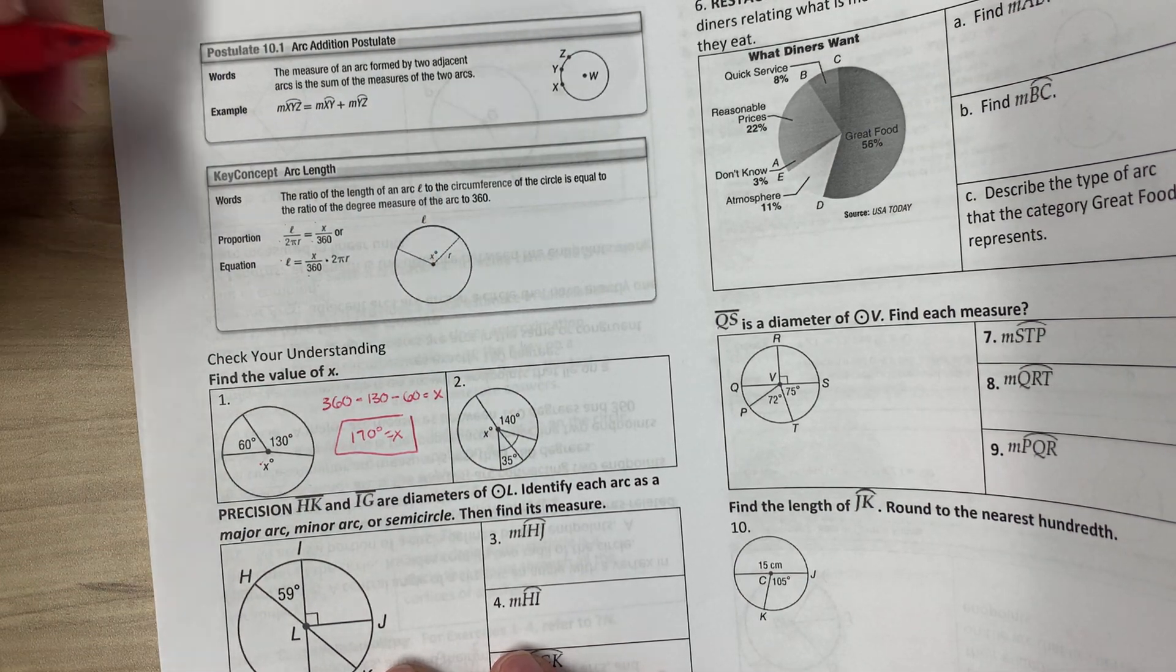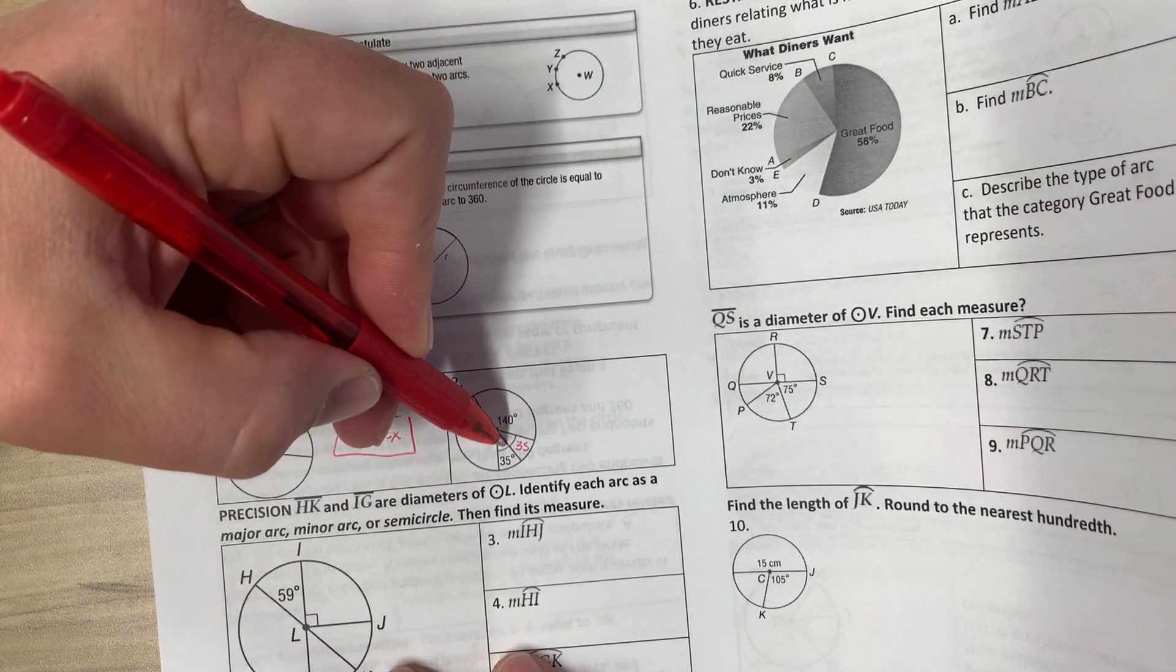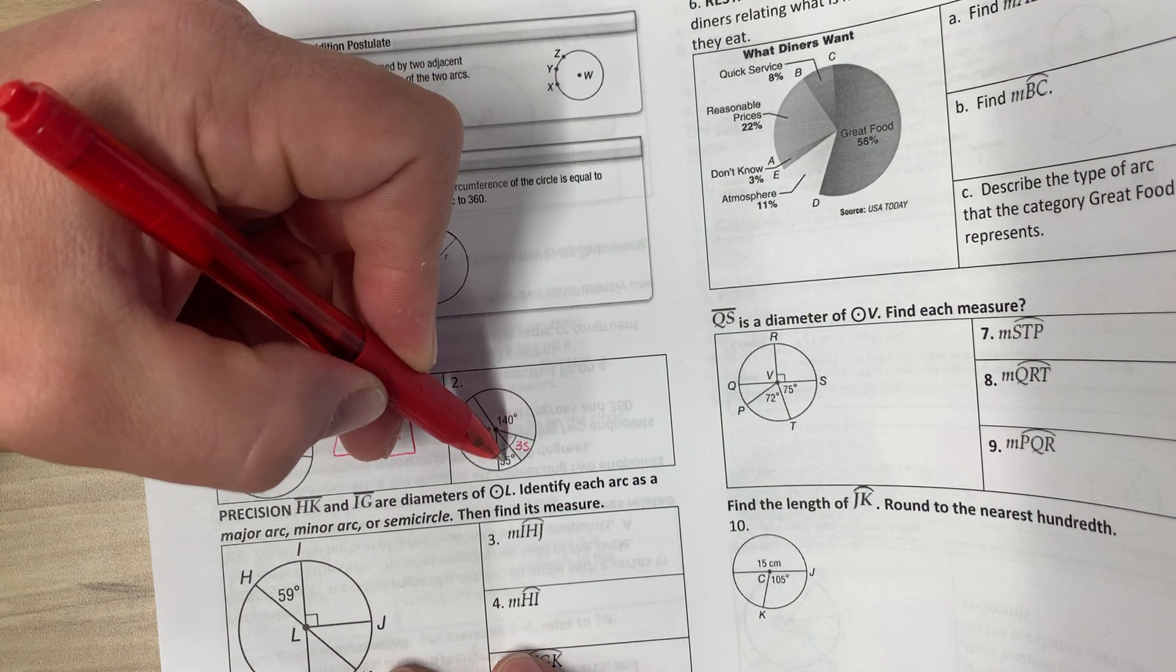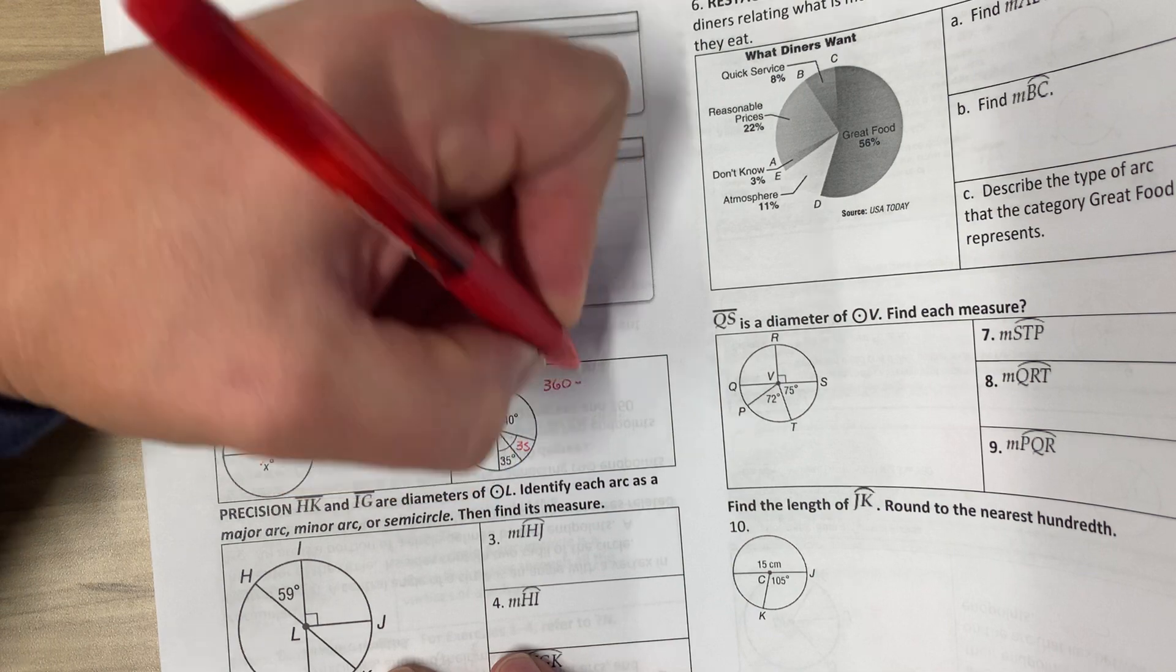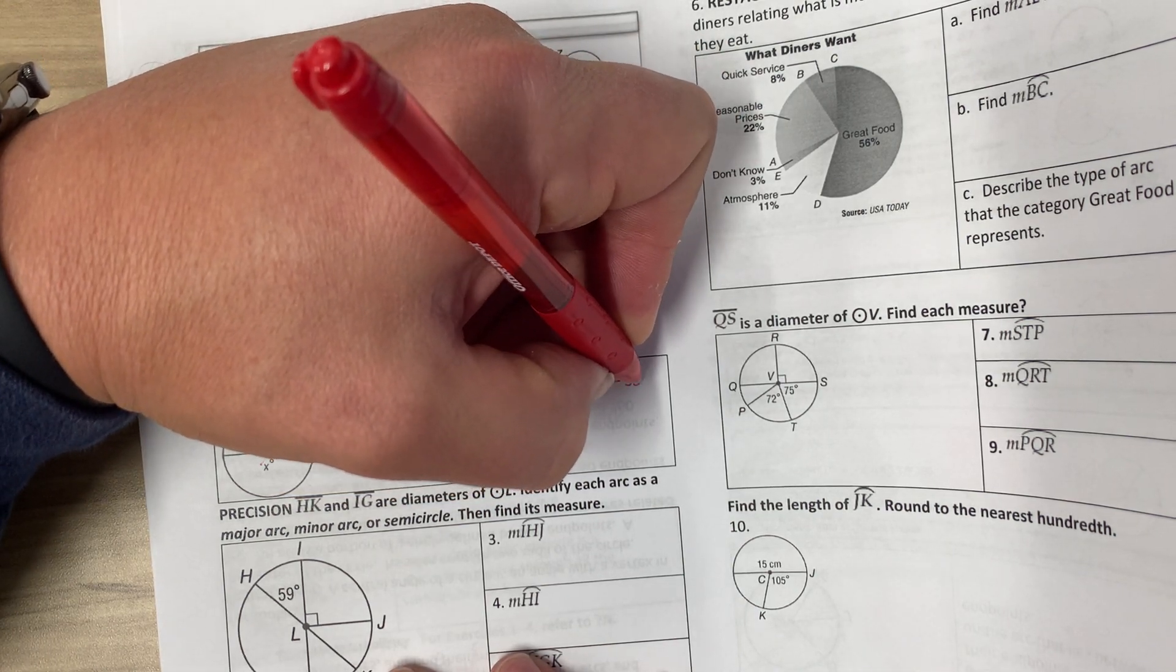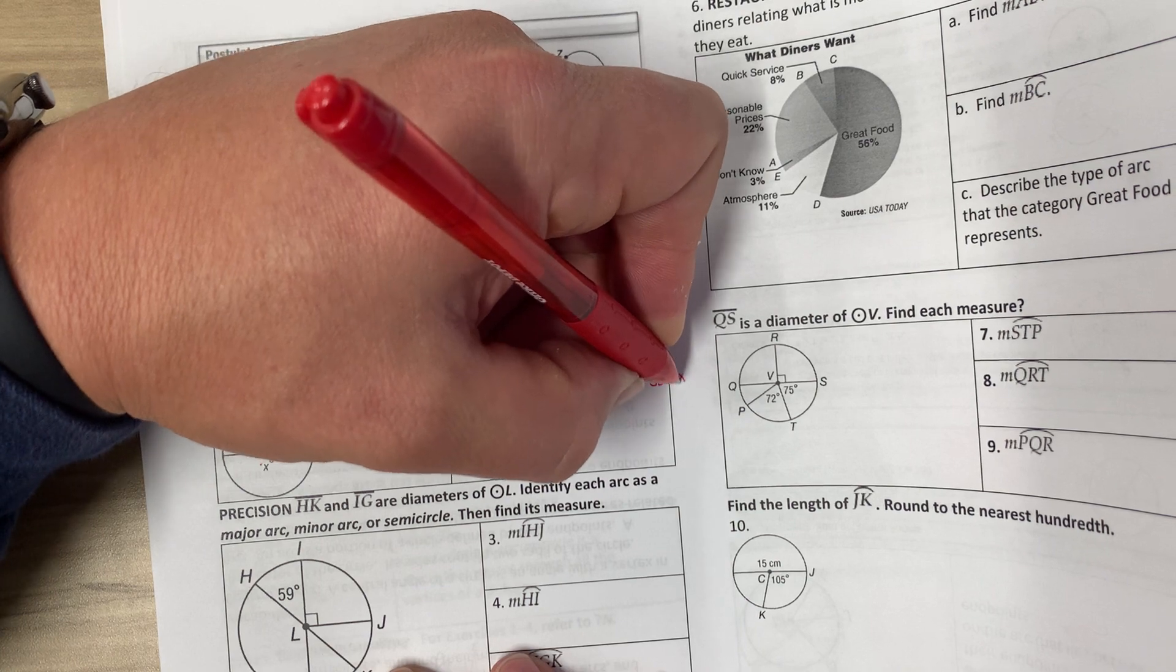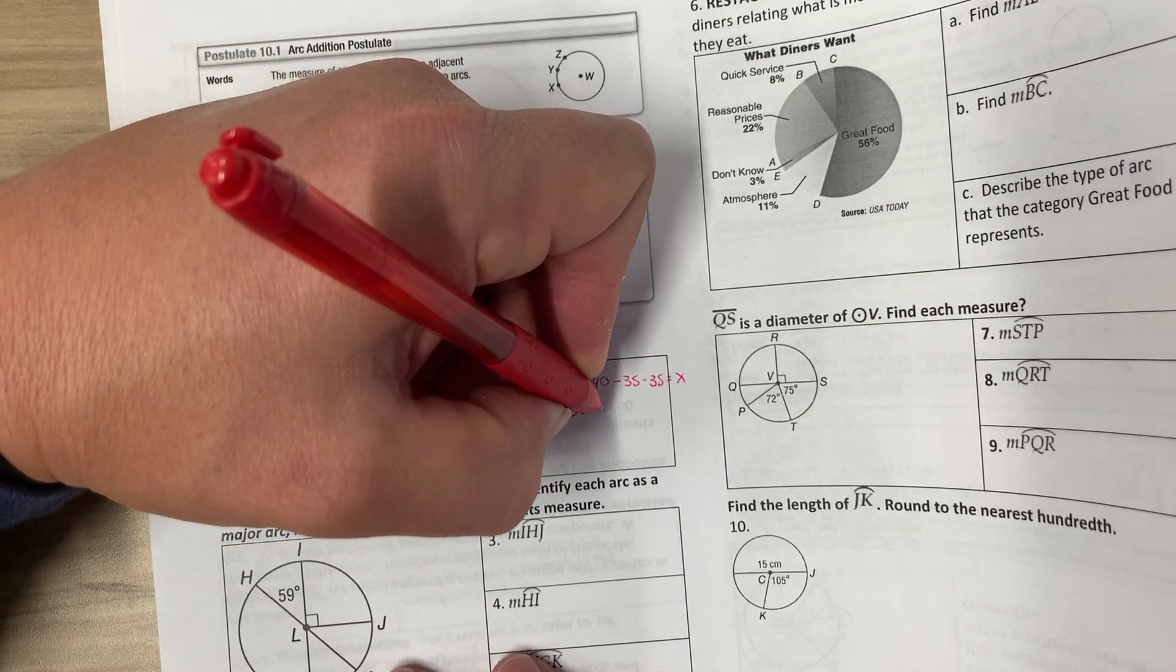On number 2 we're doing the same concept. These angles are marked congruent, so we know this is 35 and 35. We know this is 140. We know the whole circle is 360. So I just do 360 minus 140 minus 35 minus 35 equals X. So I get 150 degrees equals X.